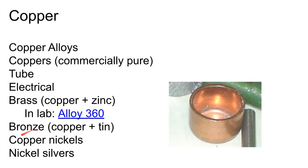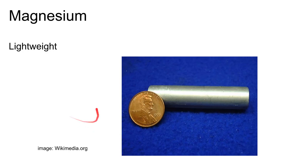There are also copper-nickels and nickel silvers, which are actually copper alloys. Naval brass is really good at corrosion resistance but gets more expensive. Two things not commonly known about copper: it's actually heavier than steel, and it has a very high melting point.